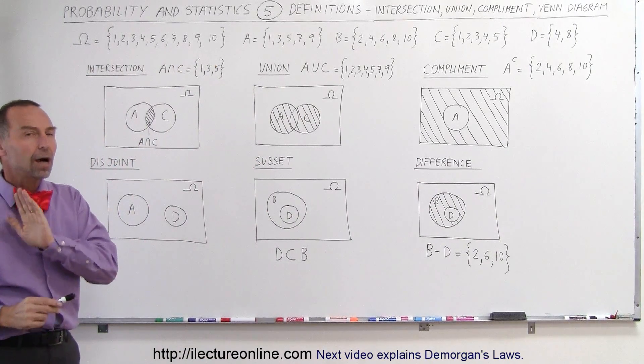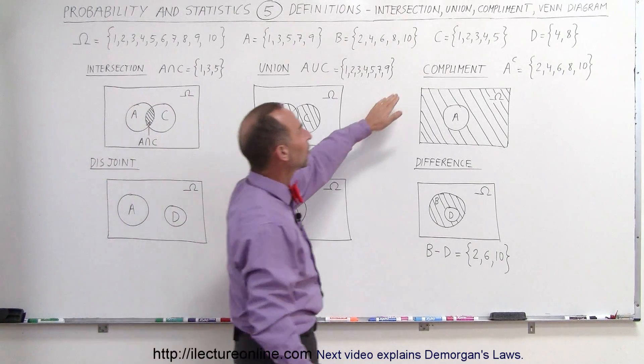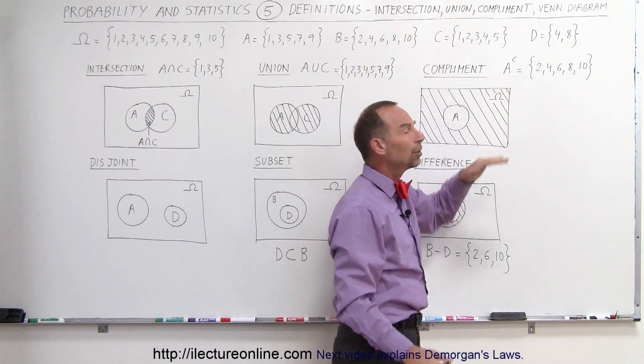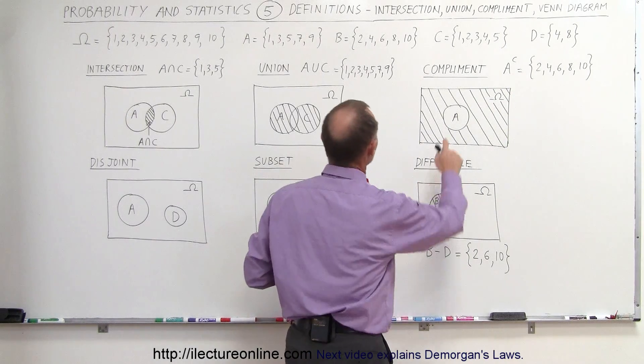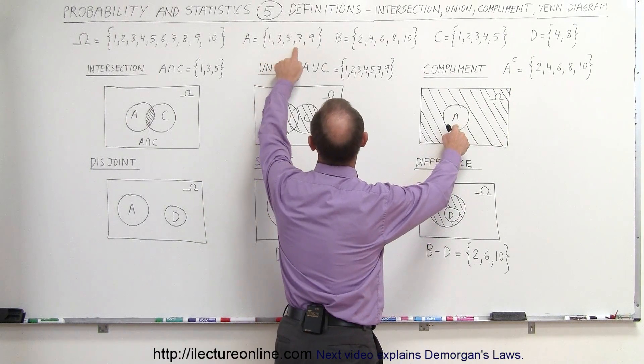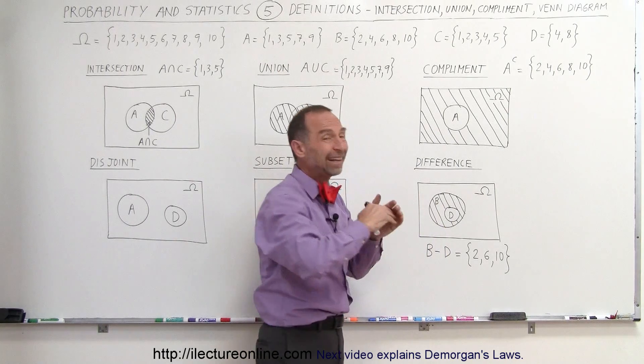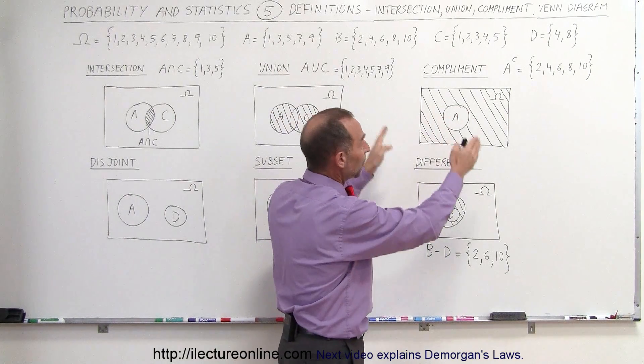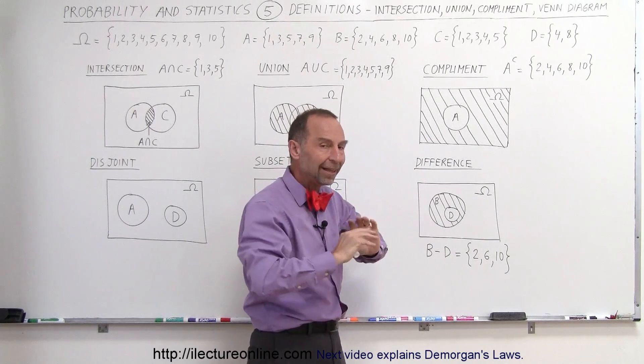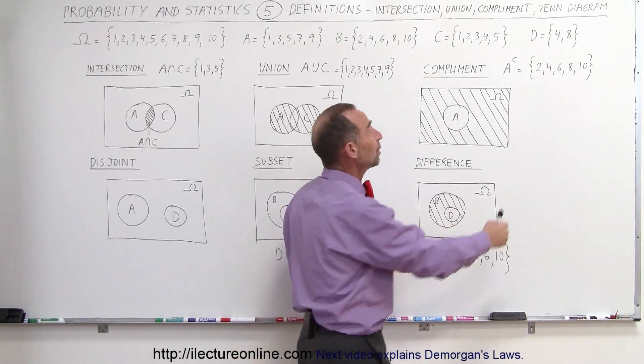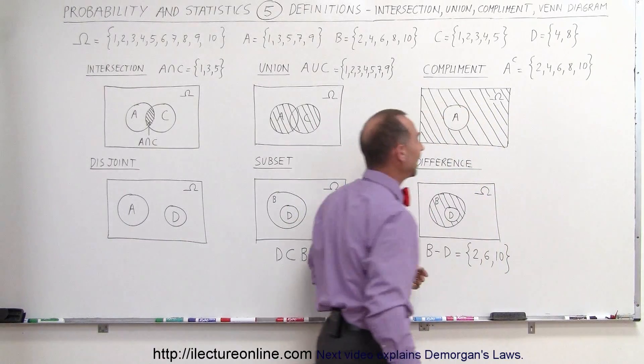Now we have what we call the complement. The complement of a set or subset is simply all the numbers that do not belong to that set. Since A has all the numbers 1, 3, 5, 7, and 9, the ones that are left over that are part of the sample space but not in A are called the complement of A. So all the elements not in A, which would be 2, 4, 6, 8, and 10.